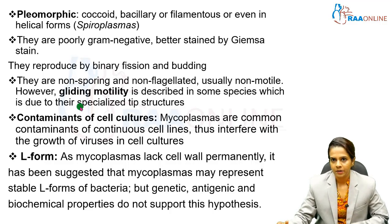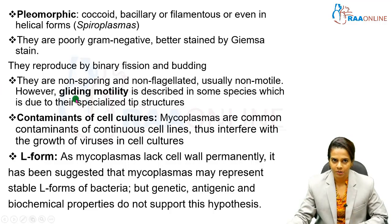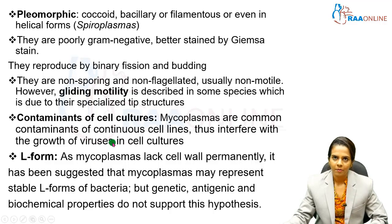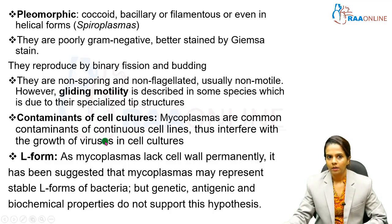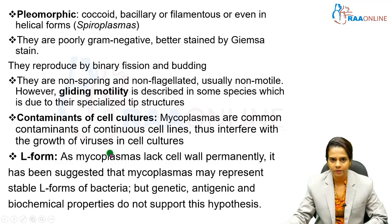Mycoplasma itself does not have conventional motility, but gliding motility can be appreciated because of its specialized tip structures. Mycoplasmas are also common contaminants of continuous cell lines, and they can interfere with the growth of viruses in cell cultures.